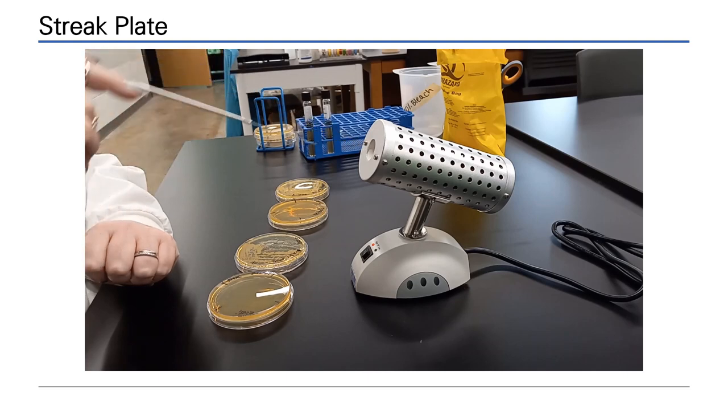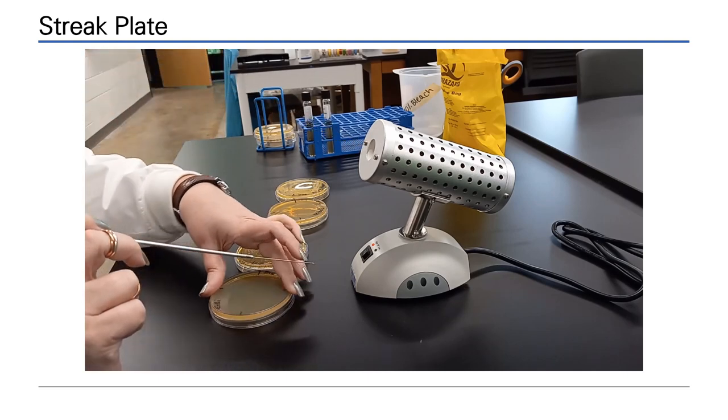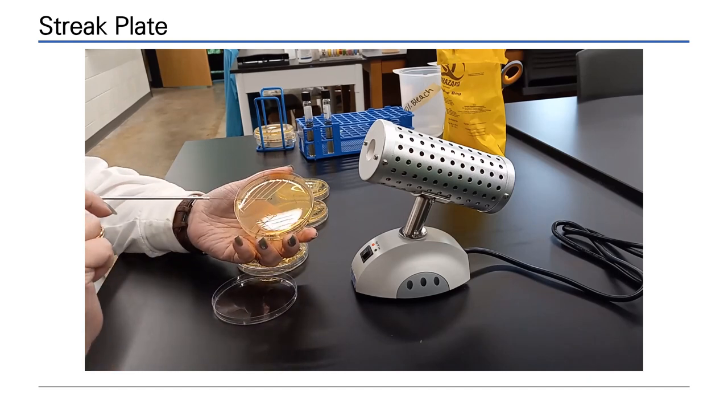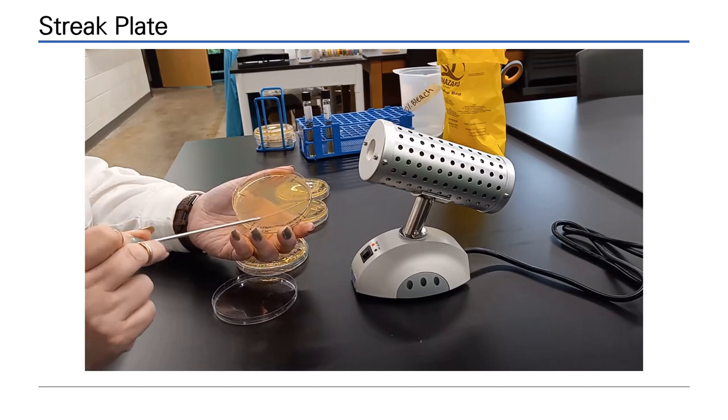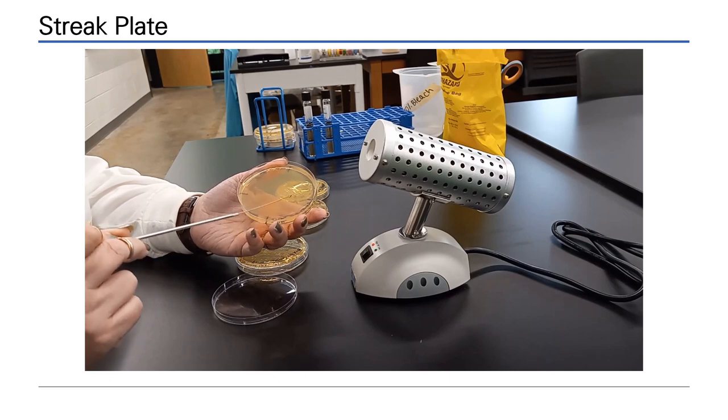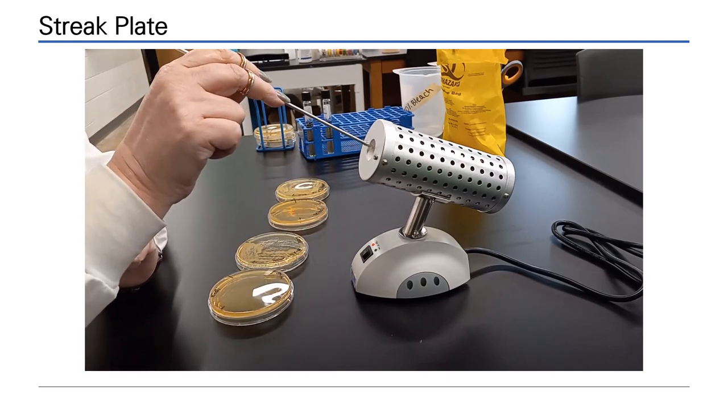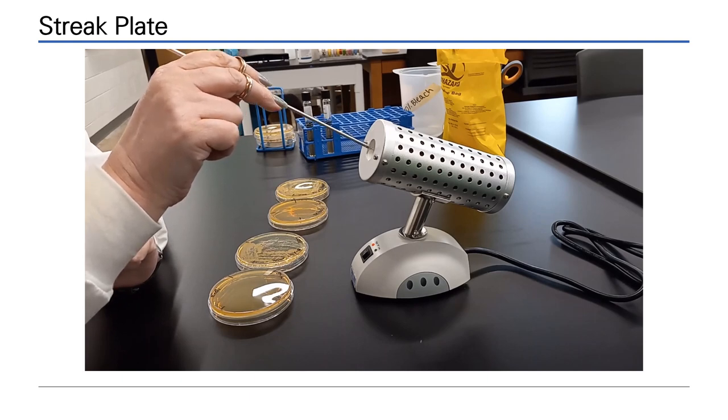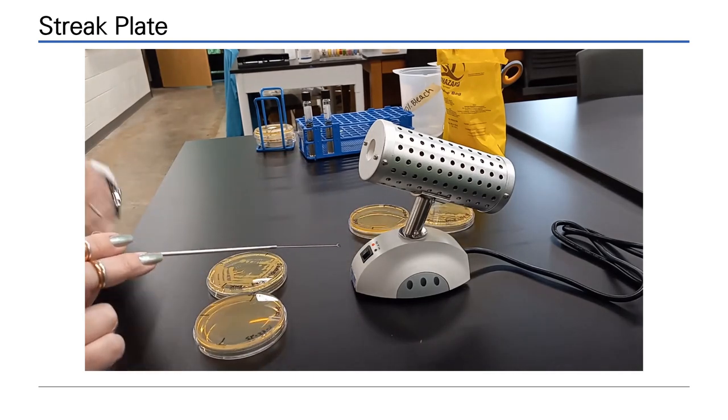The fourth quadrant is streaked in a slightly different way. Traditionally, you enter the third quadrant, drag the cells across and zigzag into the center. Sterilize the loop. The quadrant streak plate is complete and will now need to be incubated overnight to allow for growth.